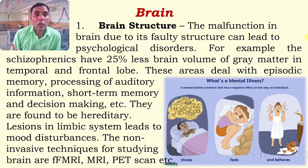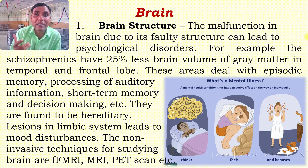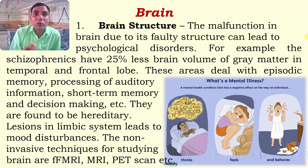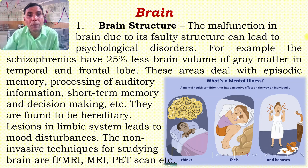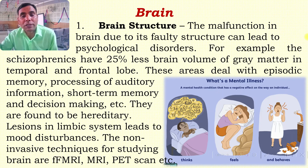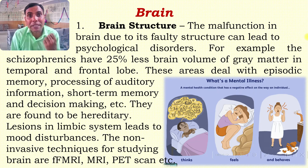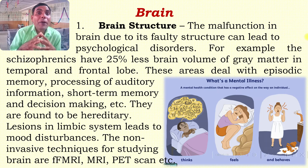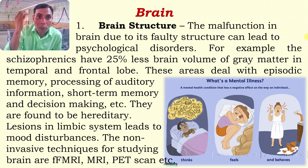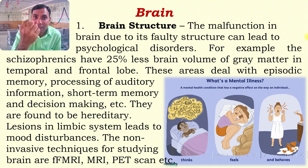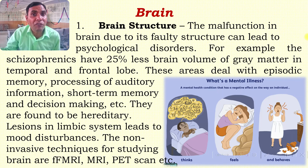The brain structure is very important for the proper functioning of the whole body. Malfunction in the brain due to injury or organic causes can lead to psychological disorders. It has been found that people who are schizophrenic have 25 percent less brain volume of gray matter in the temporal and frontal lobes. Reduction of 25 percent in these lobes in a normal individual may lead to schizophrenia.